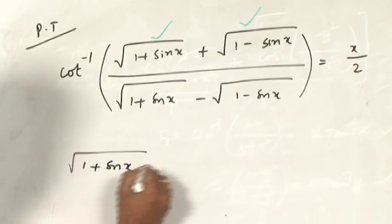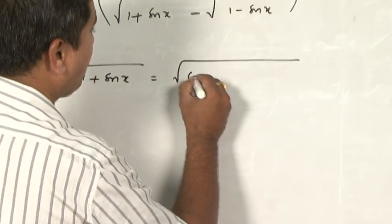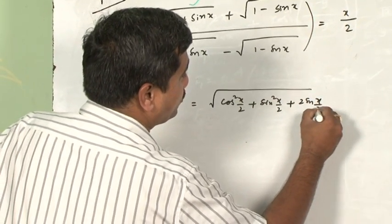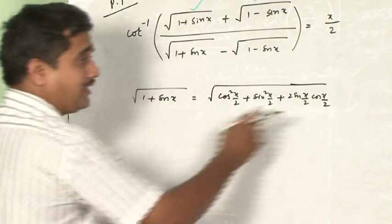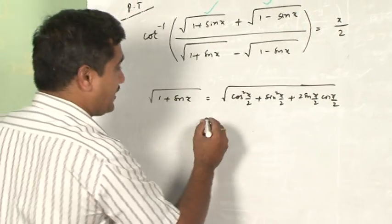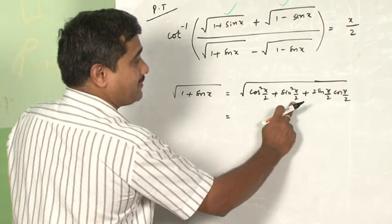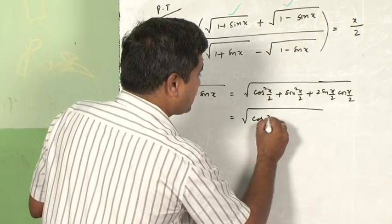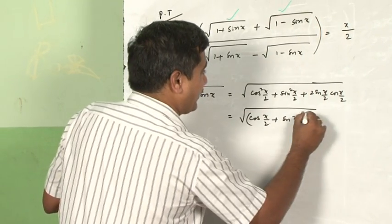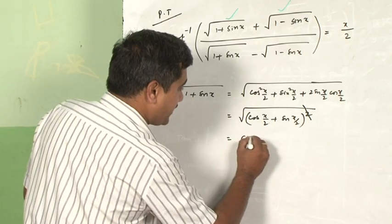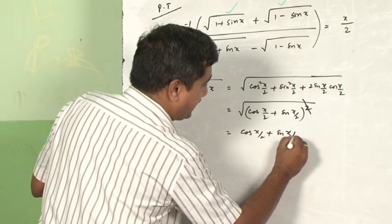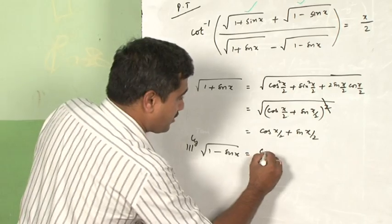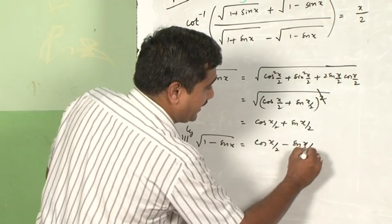I write √(1 + sinx) = √(cos²(x/2) + sin²(x/2) + 2sin(x/2)cos(x/2)) using the submultiple angles formula from Class 11 trigonometry. This equals √((cos(x/2) + sin(x/2))²) = cos(x/2) + sin(x/2). Similarly, √(1 − sinx) = cos(x/2) − sin(x/2).